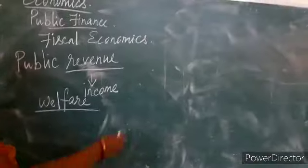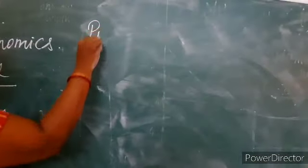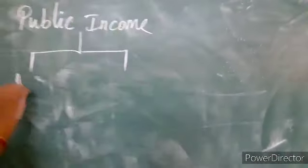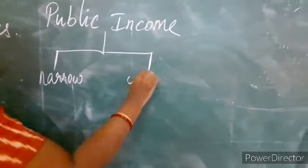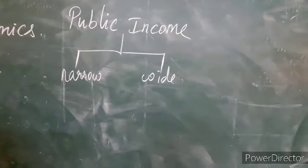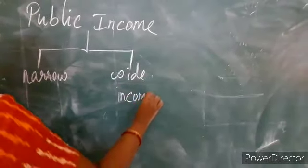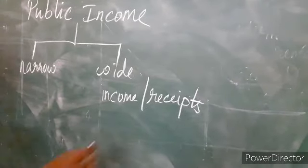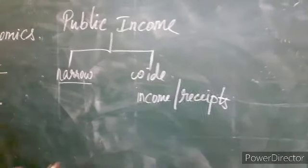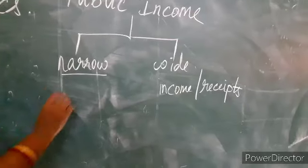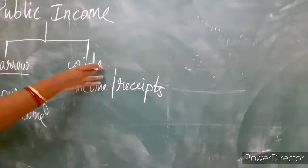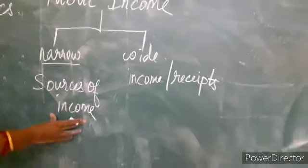According to Dalton, the term public revenue or public income is used in two senses — one is narrow and the other is wide. In the wide sense, it includes all income and receipts which a public authority may secure during a period of time. In the narrow sense, we study the sources of income of a public authority — how they raise income or receipts during a period of time. How the government gets its sources of income is known as revenue resources.